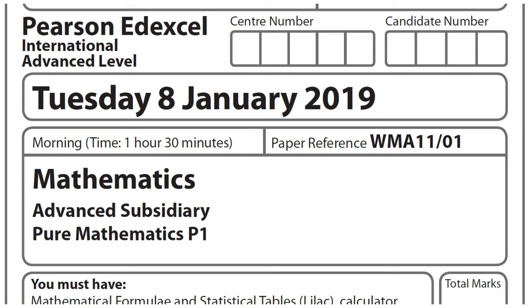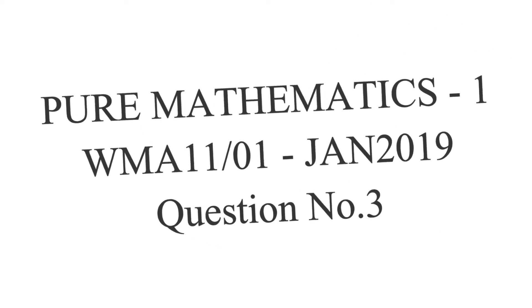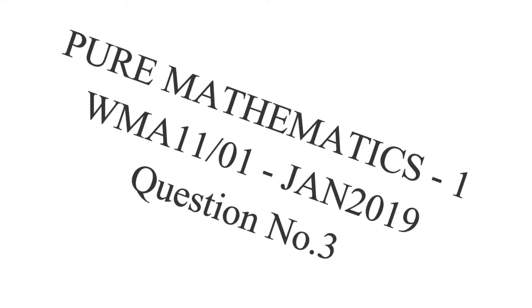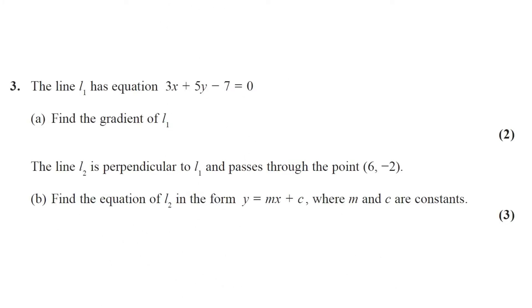Hi, welcome back to my channel. This is Bhaiju Vasudevan. Question number 3. The line L1 has equation 3x plus 5y minus 7 equals 0. Part A, find the gradient of L1. This question got two marks.